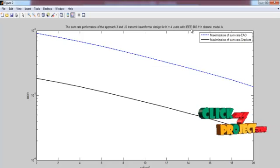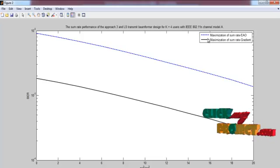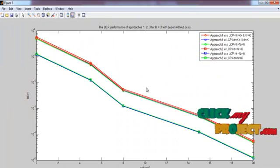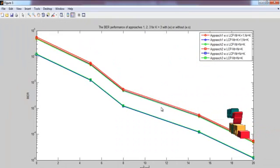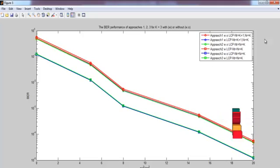four users are performed, and this is implemented in IEEE 802.11n channel model A. This is the BER response of approaches one, two, three for three number of users with and without beamforming, with and without LCP coding. And here,